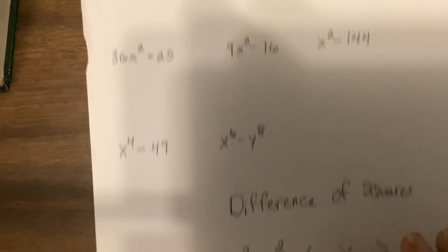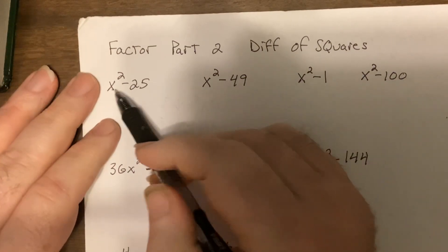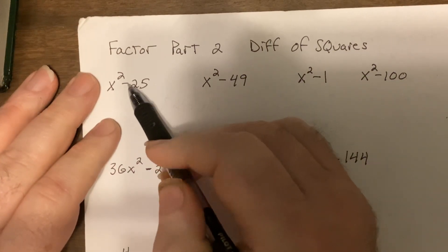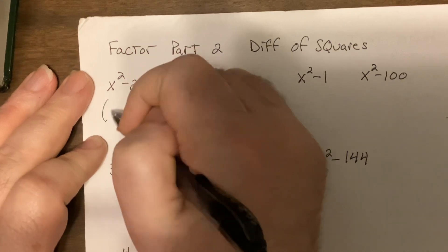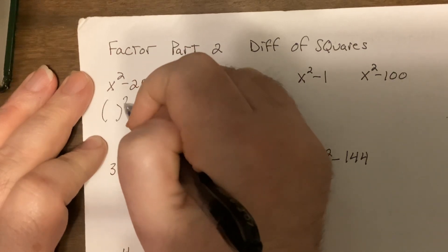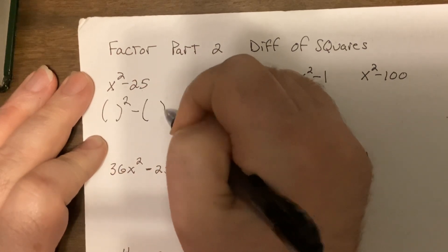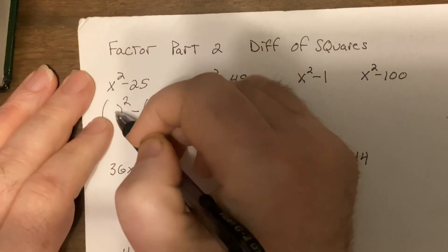So if I have a binomial — that's two terms separated by subtraction — I'm going to look to see: do I have a square minus a square?